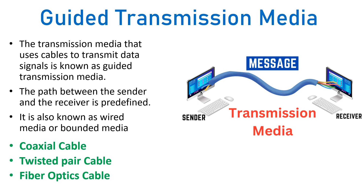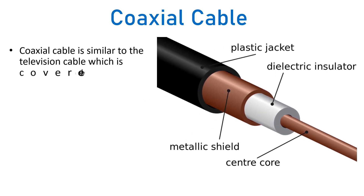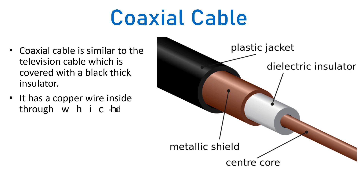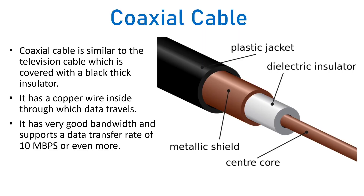Coaxial cable is one of the commonly used guided transmission media. It is similar to the television cable, covered with a black thick insulator, and inside there is a copper wire through which the actual data travels. Coaxial cable has good bandwidth and supports a high data transfer rate of 10 Mbps or more. Bandwidth is the amount of data that can be transmitted over the communication channel per unit time.